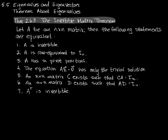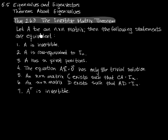Now, it's important to remember that what this does not necessarily say is that if A is an n by n matrix, A is automatically invertible. It just says that if A is an n by n matrix and A is invertible, then all these other statements are true.